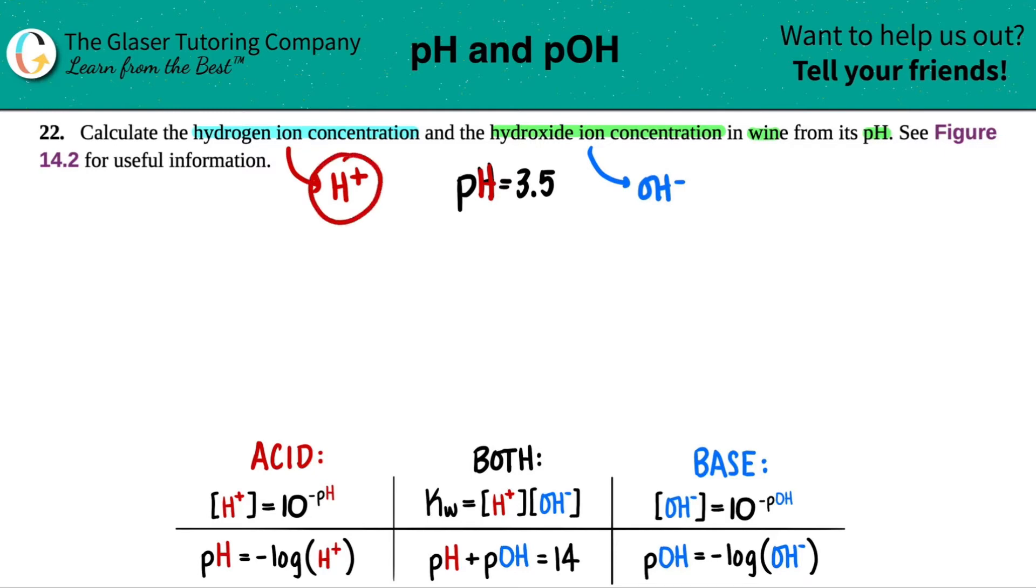Now I'm trying to look for an H+ and they gave me the pH. So look at this one, guys. I can find out the hydrogen ion concentration, aka hydronium, by just doing 10 to the negative pH. So that's the first thing that I'm going to do.